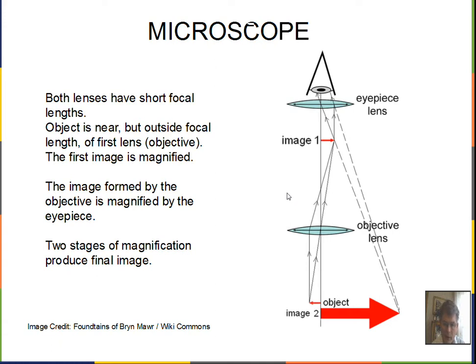So we're not going to consider more fancy microscopes with other lenses installed. This will be our study of the compound microscope. Two converging lenses: the objective lens, with the object a little outside the focal point.